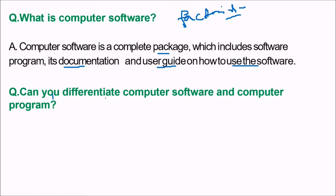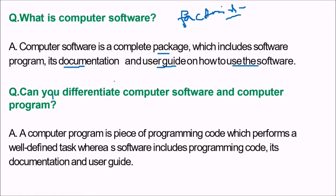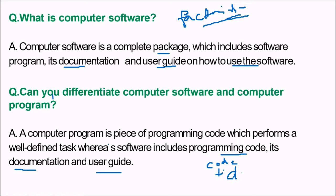Can you differentiate computer software and computer program? A computer program is a piece of programming code which performs a well-defined task. Whereas software includes programming code, documentation, and user guide. So your software is code plus documentation — all these together make a computer software.